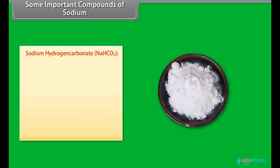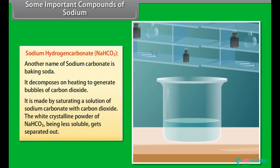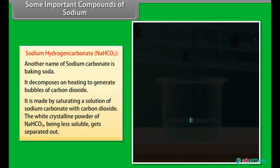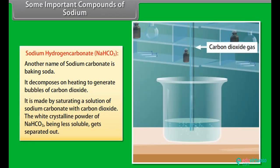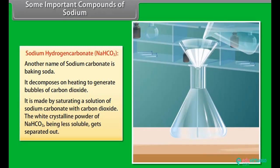Sodium hydrogen carbonate: another name of sodium hydrogen carbonate is baking soda. It decomposes on heating to generate bubbles of carbon dioxide. It is made by saturating a solution of sodium carbonate with carbon dioxide. The white crystalline powder of NaHCO3, being less soluble, gets separated out.